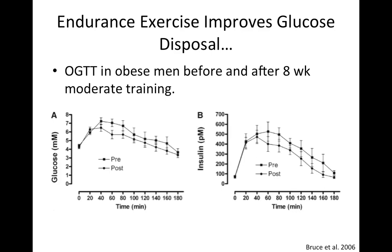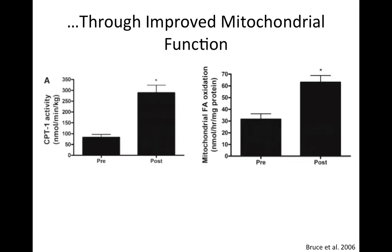On the left you can see glucose, and on the right insulin. The response to both is lower, which means that sensitivity is improved in these subjects after 8 weeks of training. This is a 3-hour OGTT, and blood glucose and insulin were lower at essentially all time points except at rest. It seems that improved mitochondrial function plays a key role in this response. CPT1 activity was increased after 8 weeks, and a whole measure of mitochondrial fat oxidation was also increased.